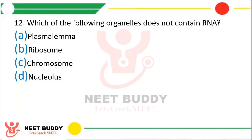Question twelve. Which of the following organelles does not contain RNA? Options: plasmalemma, ribosomes, chromosomes, or nucleolus. The correct answer is option A — plasmalemma.